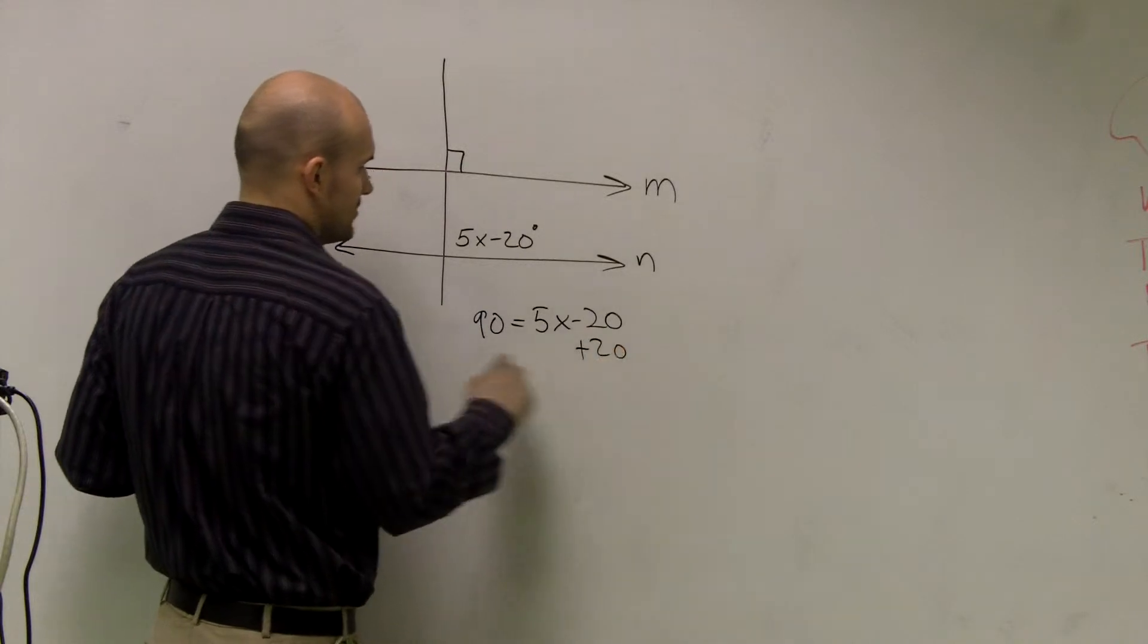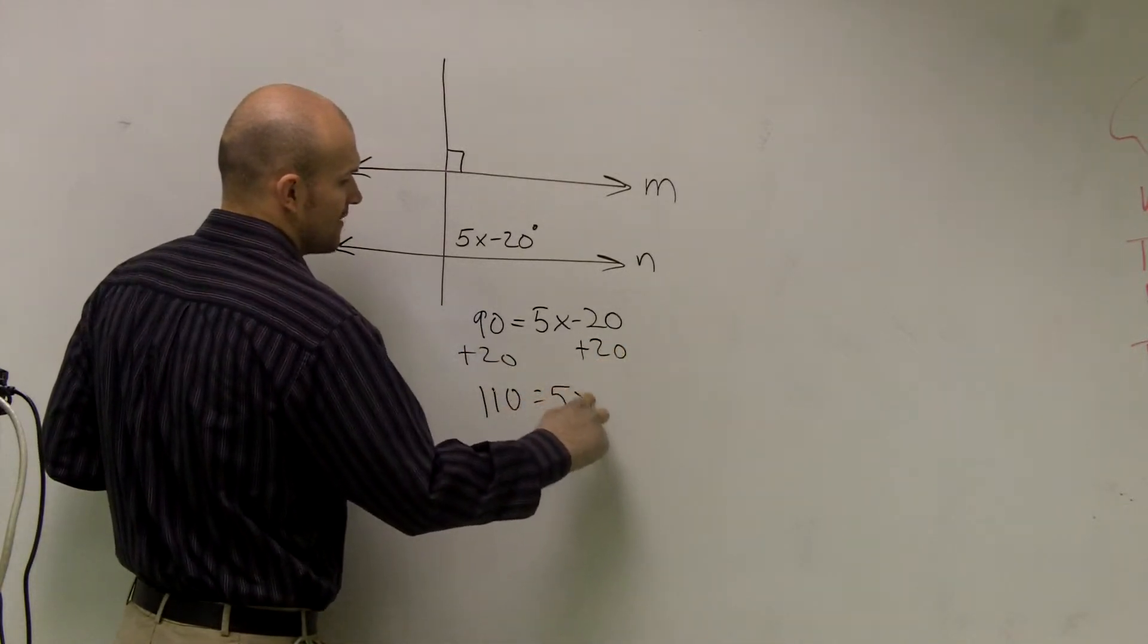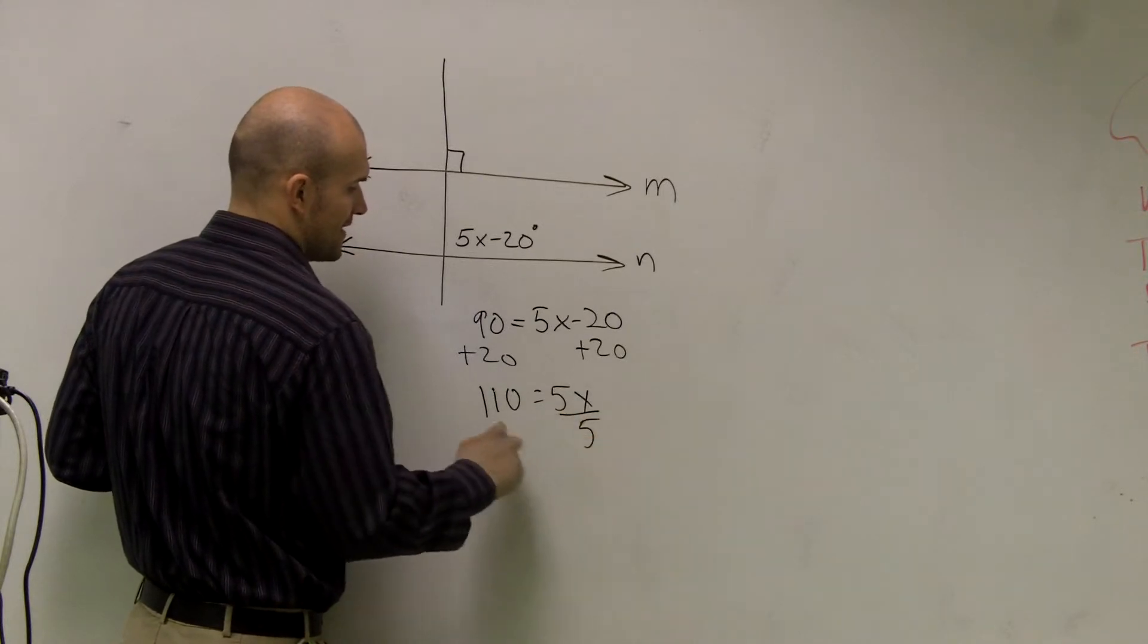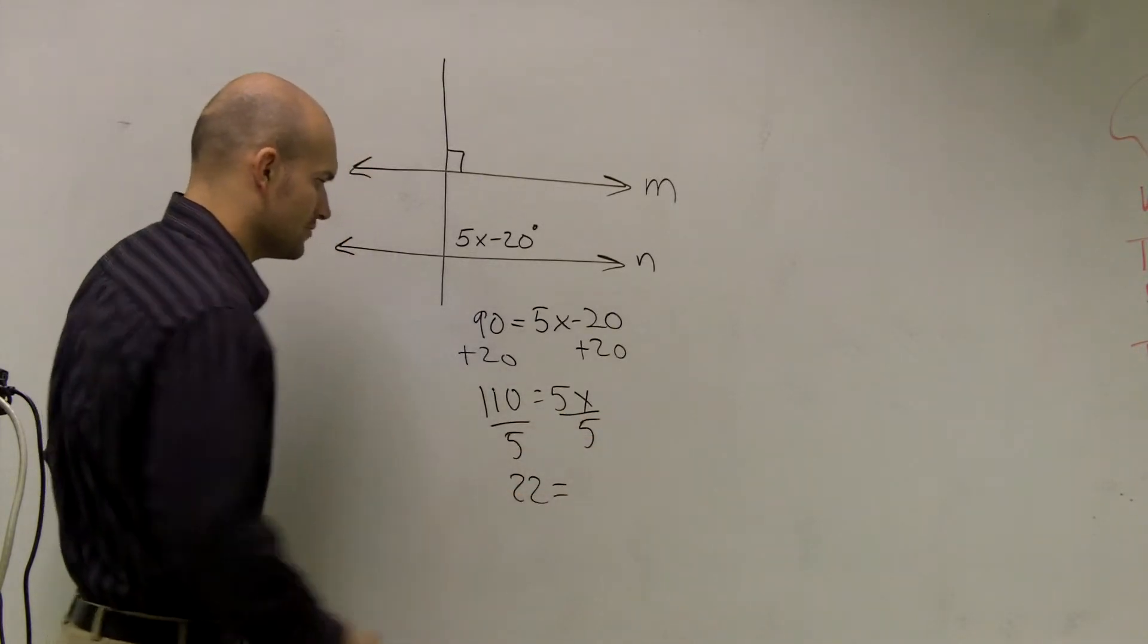So I'll add 20 to both sides, and I get 110 equals 5x. Then I divide by 5, what I have is 22 equals x.